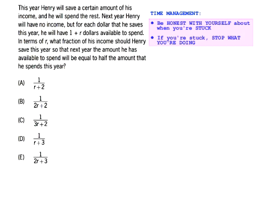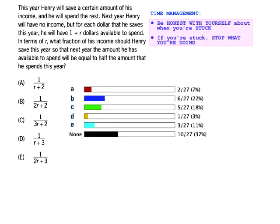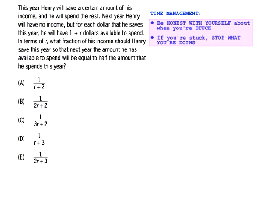This is a word problem. The answer distribution is basically random — there are about eight of you who didn't answer the question yet, and you have to pick an answer. You can't not pick an answer — that means you have to guess.